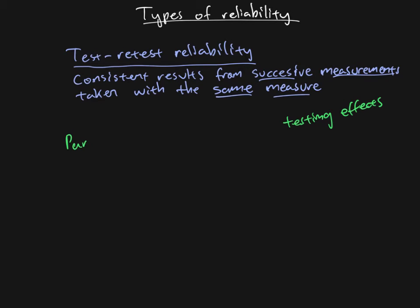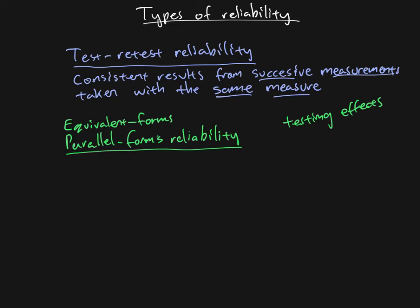That brings us to the next type: parallel forms reliability — sometimes also called equivalent forms reliability, a name that more clearly describes what we're talking about. Just like the name says, we're not going to give you the exact same version, but some kind of equivalent version. It's still a form of reliability, so we're talking about getting consistent results.